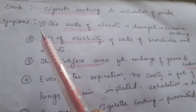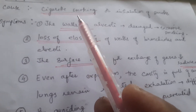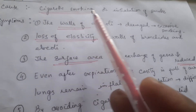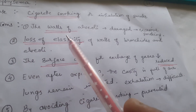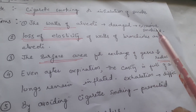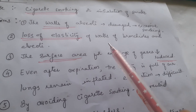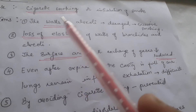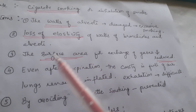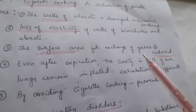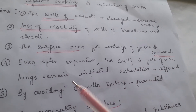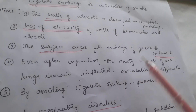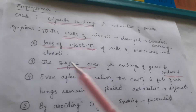Emphysema is another major disorder caused due to cigarette smoking and inhalation of smoke — even standing beside smokers can cause emphysema. Symptoms include damage to the walls of the alveoli due to excessive smoking, loss of elasticity of the walls of bronchioles and alveoli, and reduced surface area for gas exchange. Even after expiration, the lung cavity remains full of air — the lungs stay inflated — making exhalation difficult. Emphysema can be prevented by avoiding cigarette smoking.